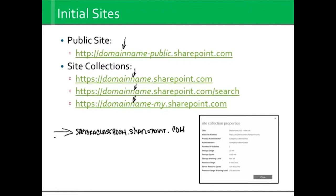They also include a public site, which in this case would be sandraclassroom-public.sharepoint.com. Not everyone uses the public site — most people already have a standing website — but if you don't have one, you can actually do your website in SharePoint and broadcast it publicly. You can also assign your full domain name so there's a redirect when you go to www.yourdomain.com. For direct search, you can go to sandraclassroom.sharepoint.com/search. And on your personal landing page, the URL changes to something like sandraclassroom-my.sharepoint.com. Again, you're not going to type these in, but you will see those URLs change up at the top.